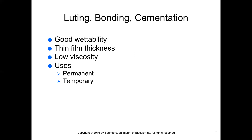Luting cements achieve retention by filling the interface between the restoration and the tooth substrate, much like household cements. Bonding cements are stronger than luting cements and fill the interface and provide micromechanical retention between the tooth substrate and the resin-based cement and restorative materials. Good adhesion requires physical, chemical, and/or mechanical mechanisms that bind the tooth structure to the restoration.